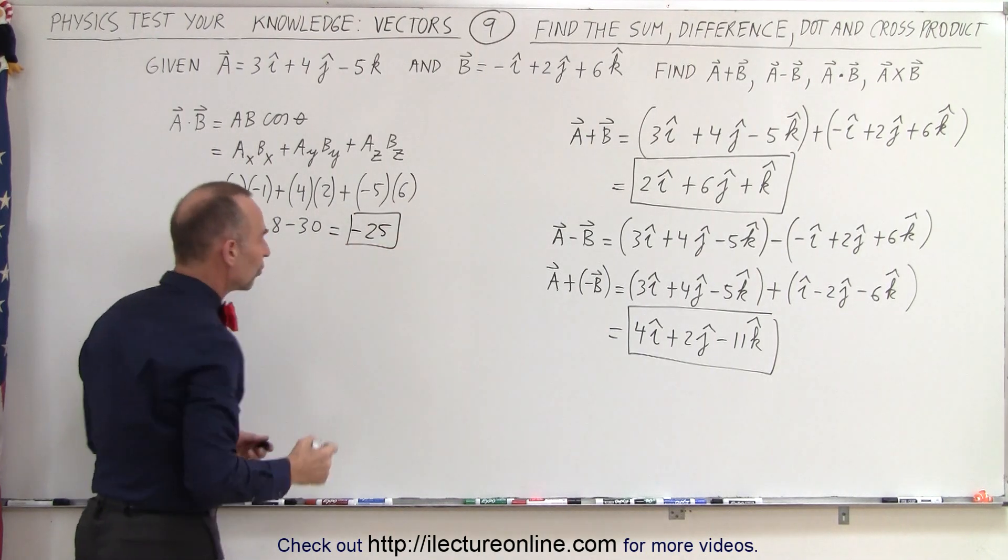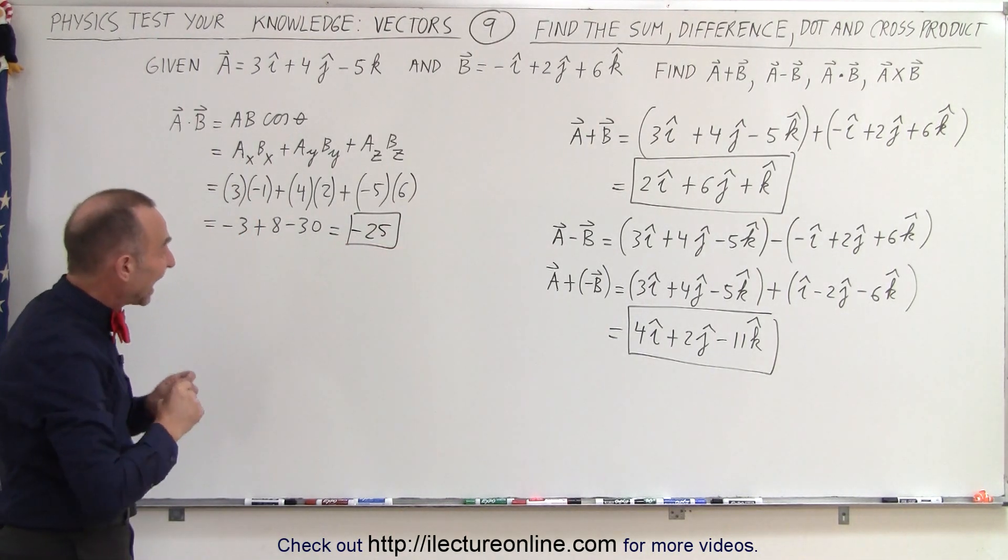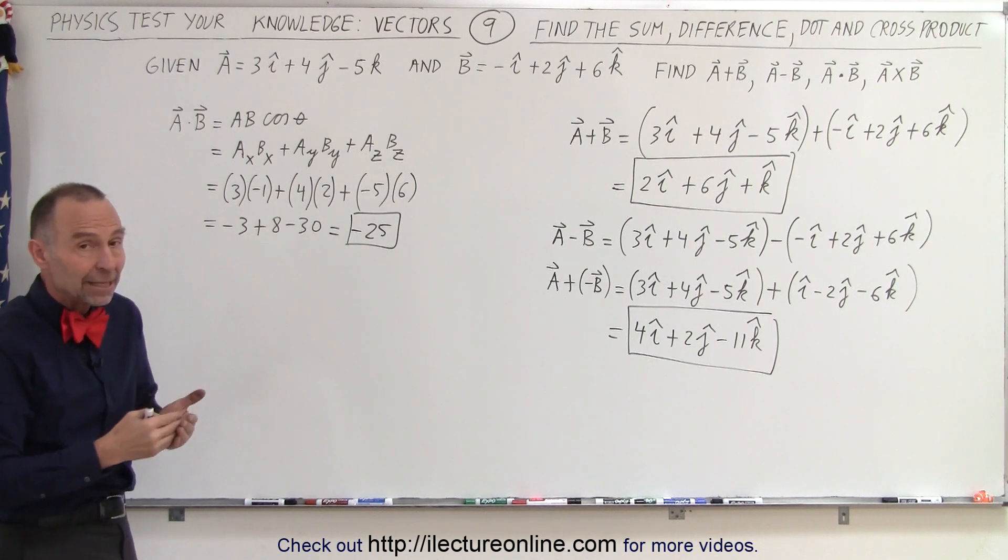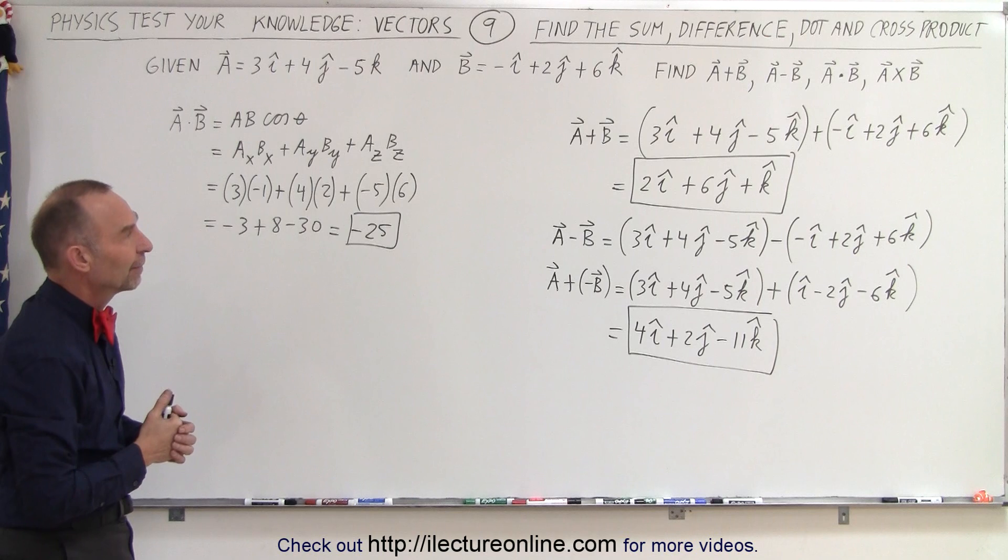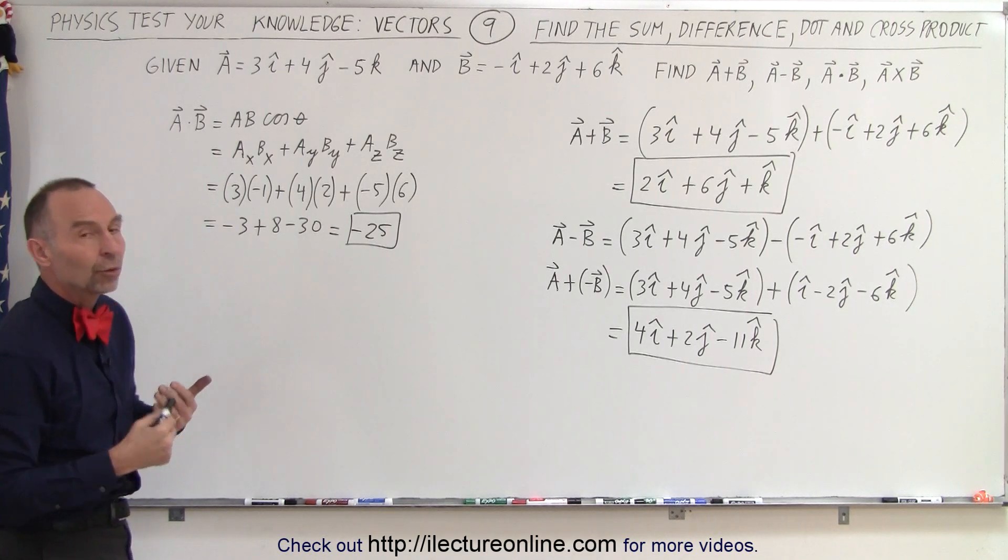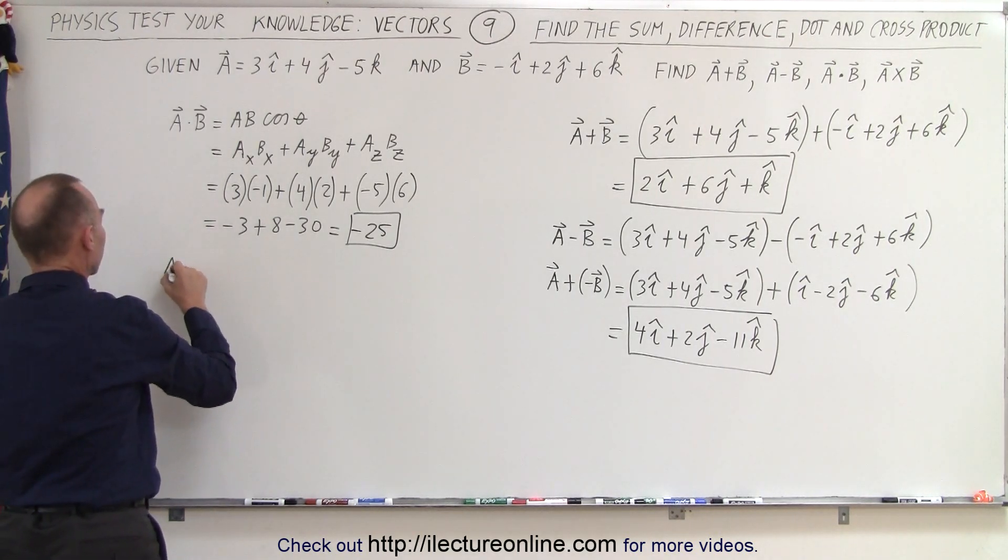Notice that the dot product gives us a scalar quantity and it can indeed be a negative scalar quantity, like in this case, negative 25. And finally, we want to do the cross product. So, when we do the cross product, we get the following.